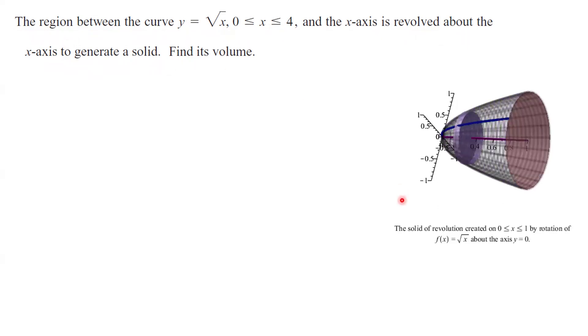So basically, you have function f(x) equals square root of x. And in this picture, I just showed you how it generates a solid. And just for simplicity, I use 0 to 1 to show what this object looks like. The function f is square root of x, but for the sake of our example, we're going to use 4.